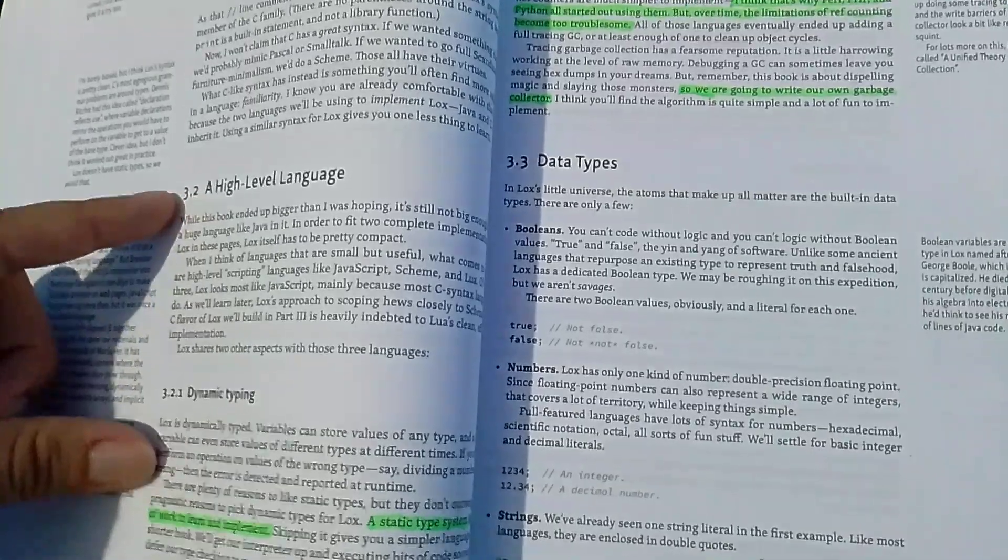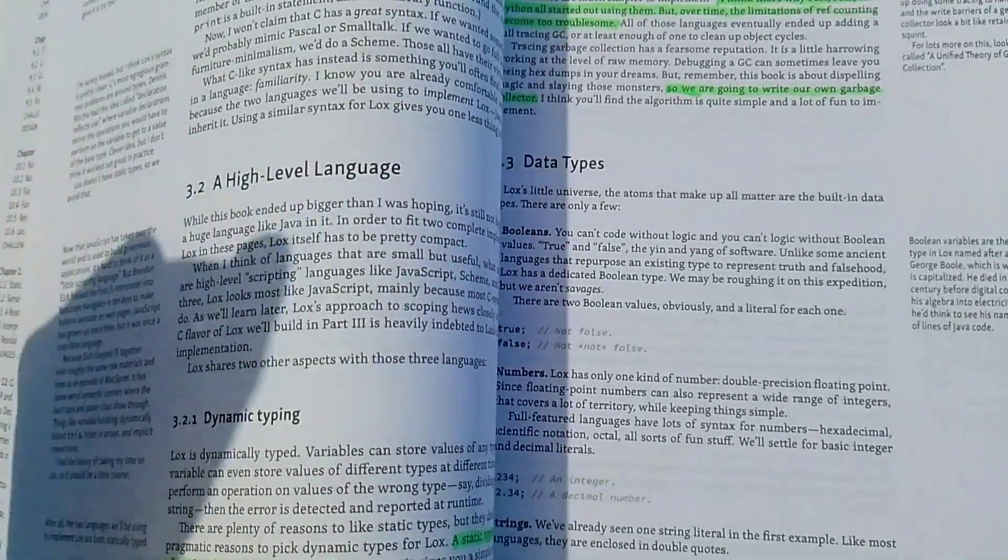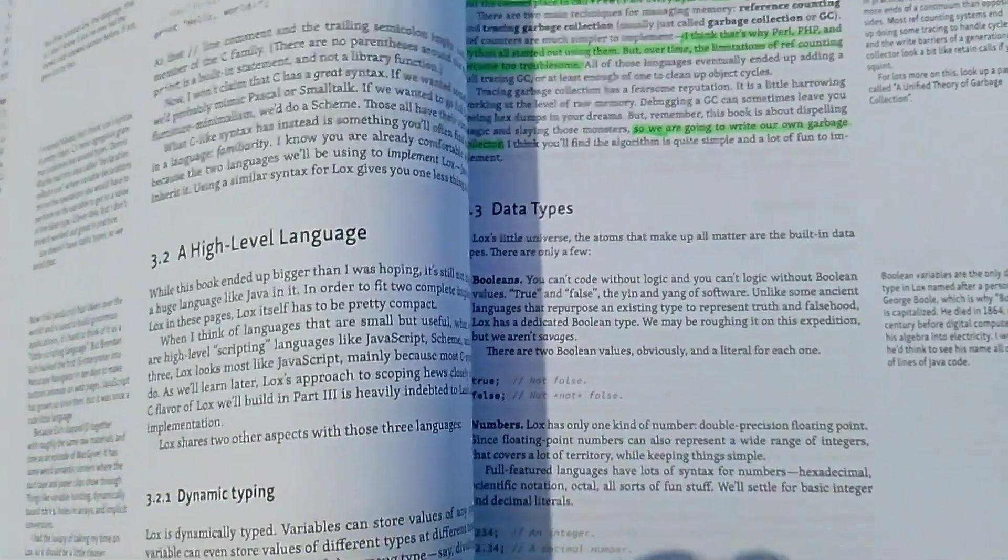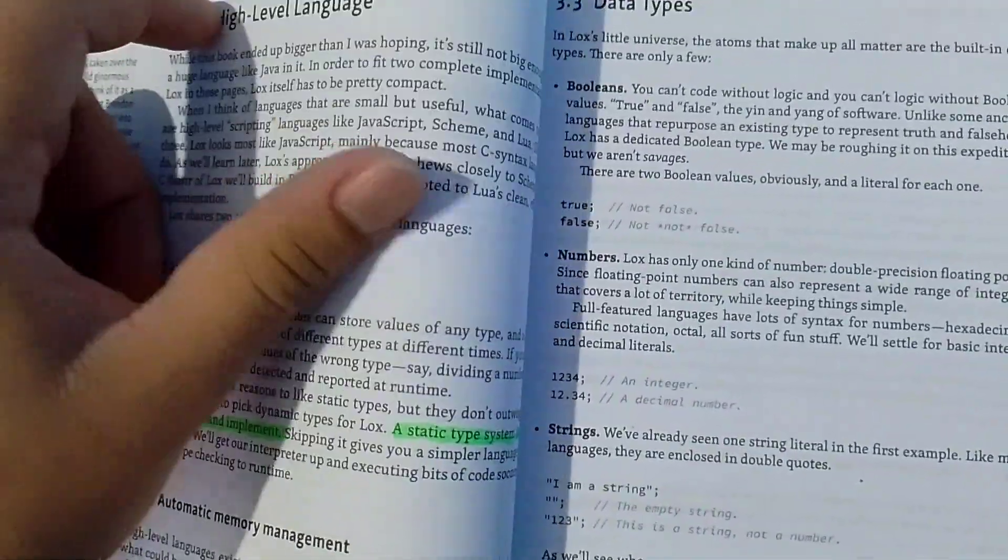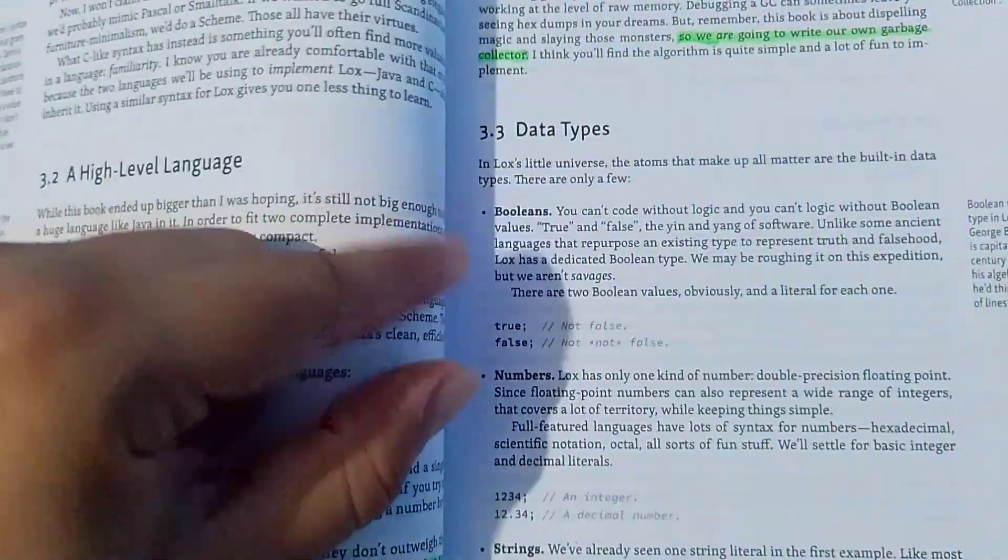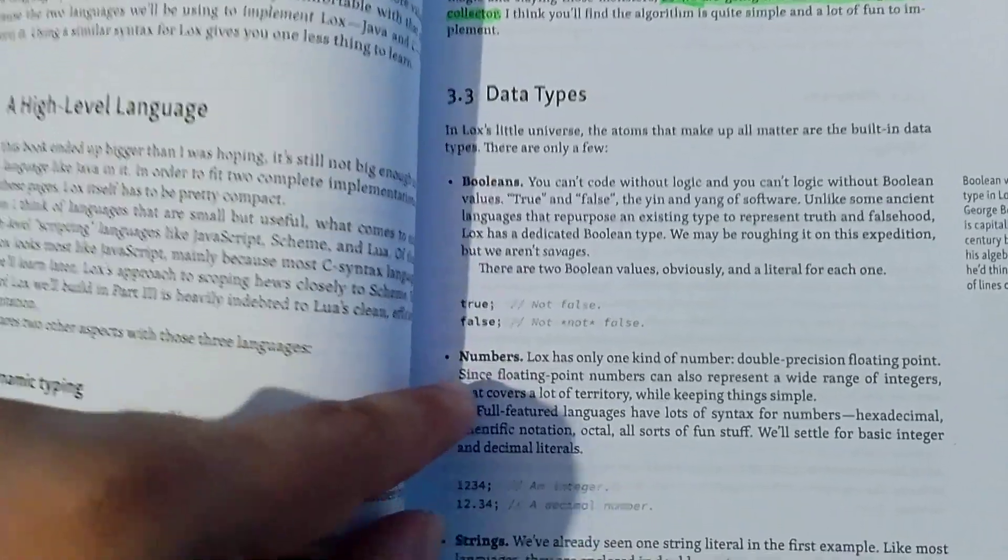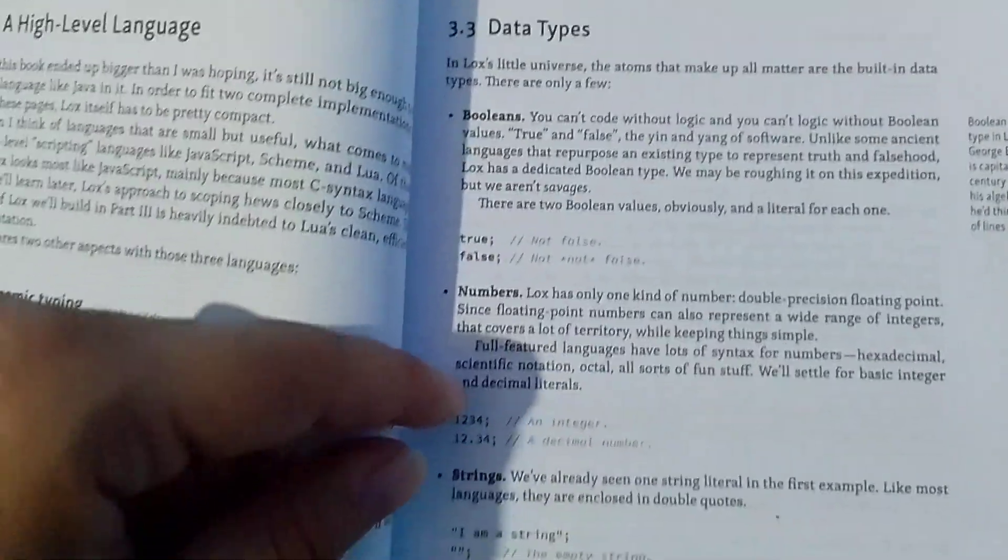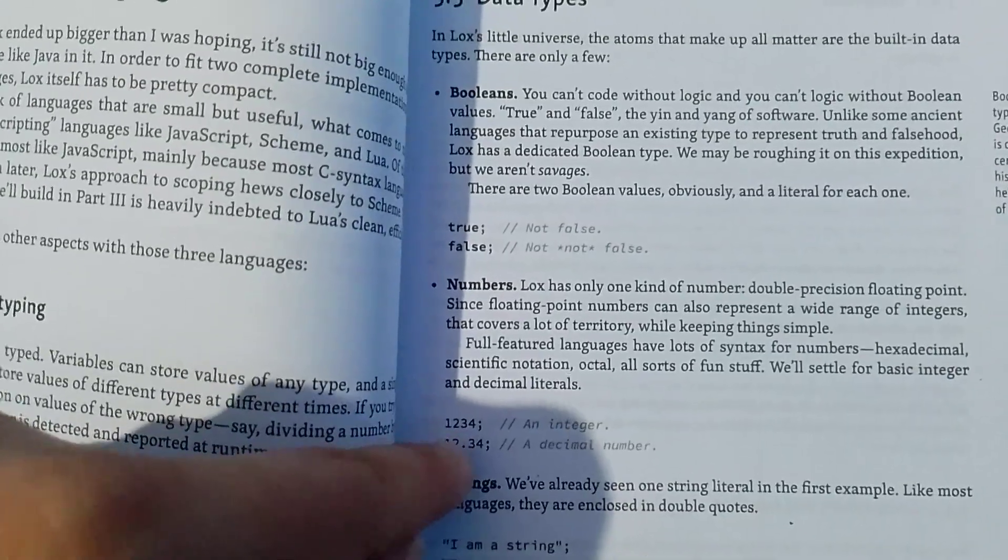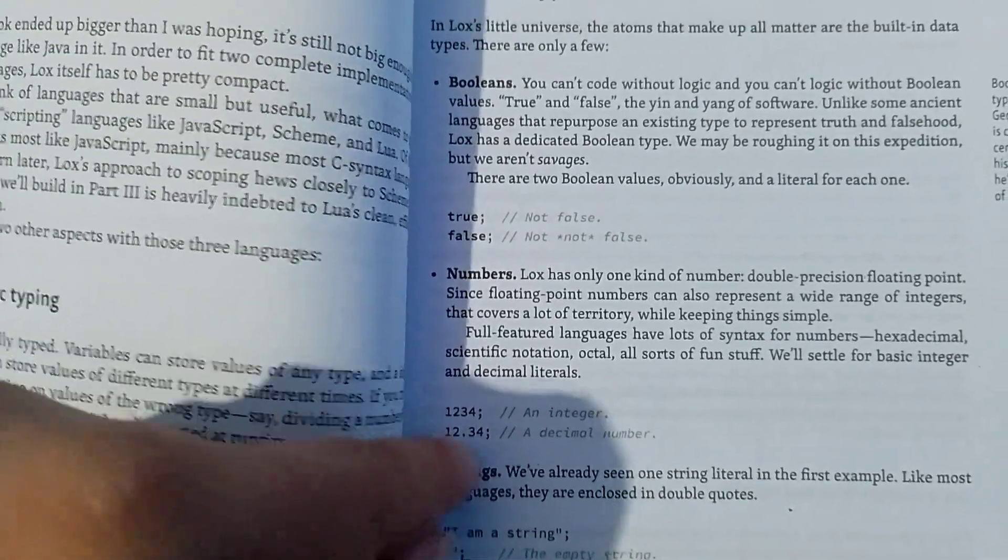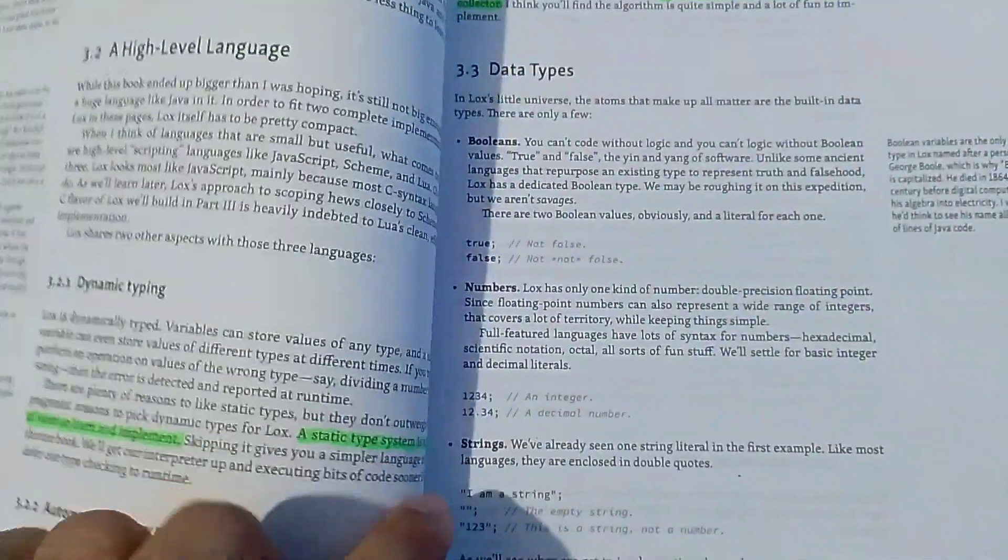But, as I said before, this language is more like JavaScript, but actually makes sense. Okay. So, we have boolean values, numbers, and in LOX we only have two types of numbers, a double float, and an integer.